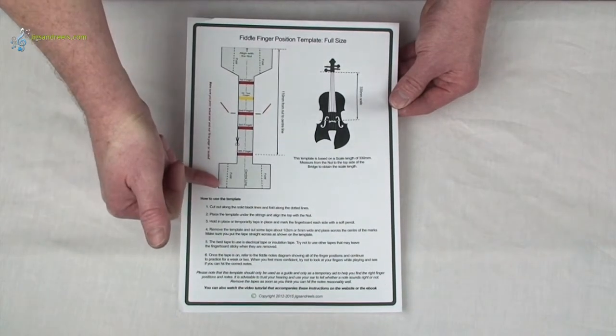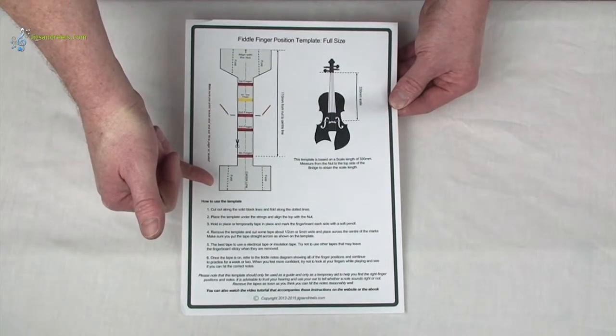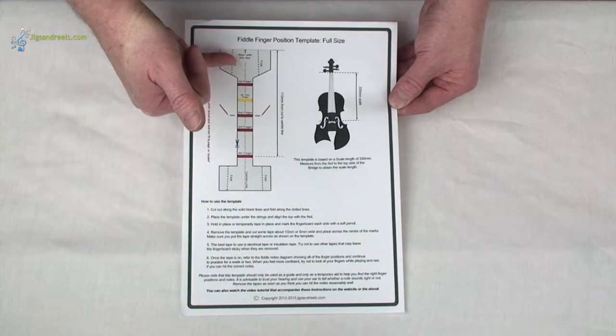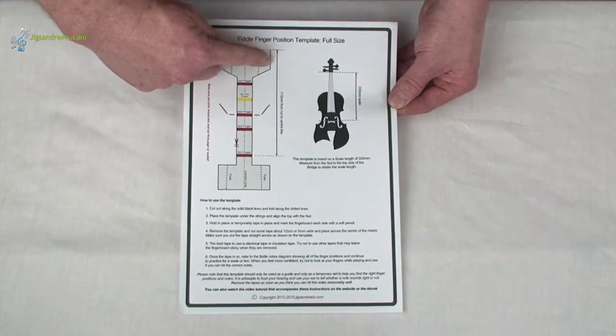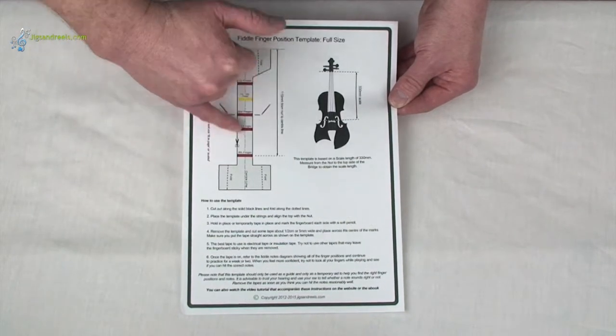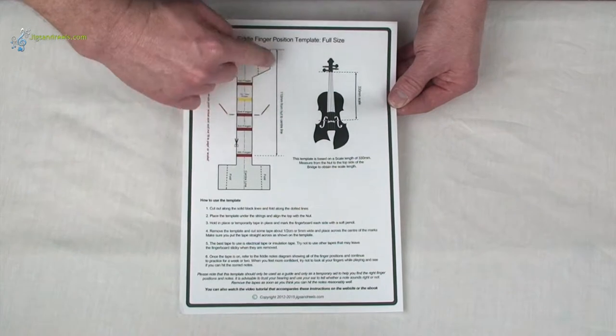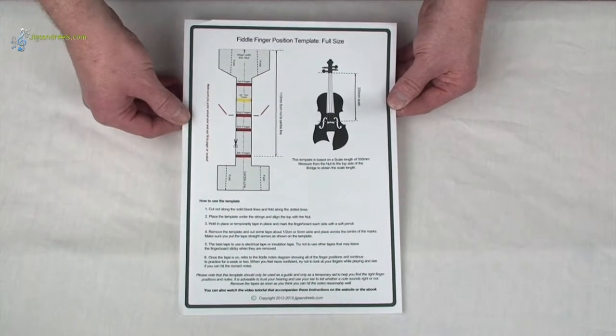Make sure when you print it off that it's printed in full size rather than fit to page or scaled, as we need these dimensions to be correct. You can double check once you've printed it off. They all have a reference mark from the nut to the last line, and you can check that distance. If that's correct when you've printed it, then you're good to go.